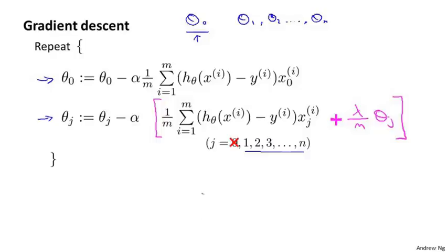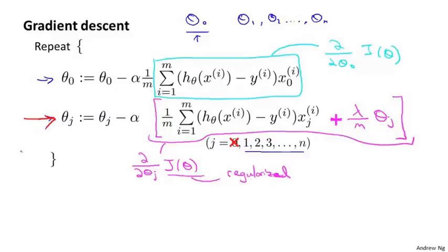If we're trying to function j of theta, and do the calculus to prove it. If you look at this term, this shows something pretty interesting. Theta j gets updated.